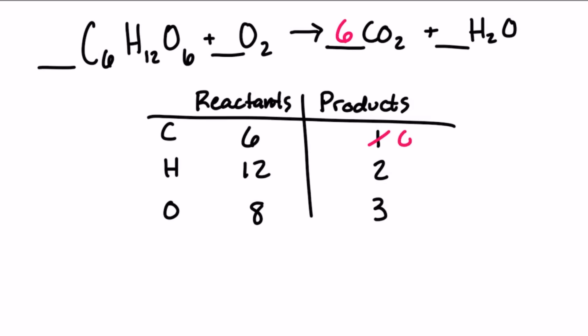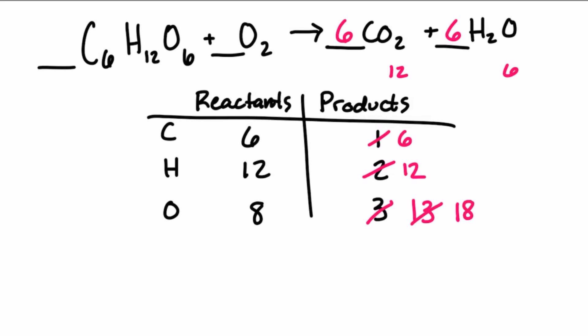If we add a six coefficient to the product, our carbon is balanced. That six also distributes to the two, so six times two is 12 plus one — we have 13 oxygen in the product. But before we balance the oxygen, let's do the hydrogen. If I add a six coefficient to the H2O, six times two creates 12 hydrogen. That six also distributes to the oxygen, so now we have a total of 12 plus six oxygen, or 18 oxygen in the product. Now let's look back at the reactant. To balance the oxygen, we're only going to add a coefficient to the oxygen that's by itself. To get 18: six plus 12 gives me 18. I can get 12 if I add a six coefficient here, so a total of 18 oxygen in the reactant.